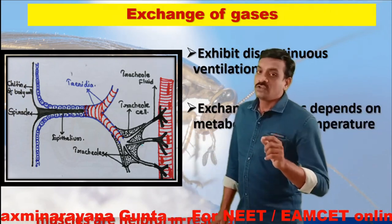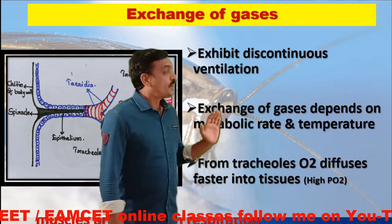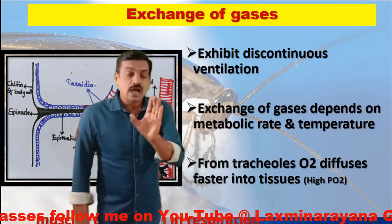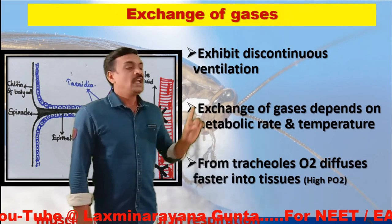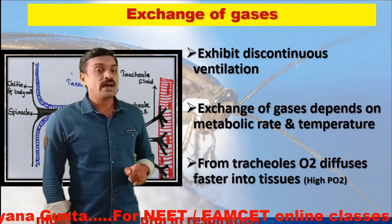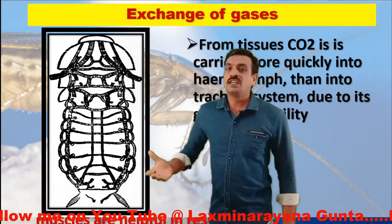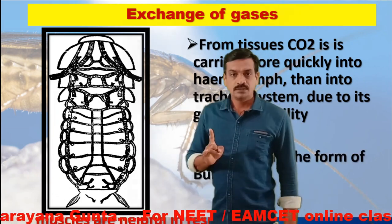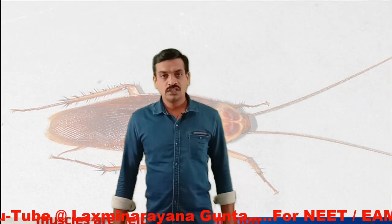The exchange of gases depends upon the metabolic rate and the temperature. From the tracheoles, O2 diffuses faster into the tissues due to high partial pressure of oxygen. Carbon dioxide is carried more quickly into the hemolymph than into the tracheal system due to its greater solubility. Some CO2 is also released out in the form of bursts. This concludes the respiratory system of the cockroach.